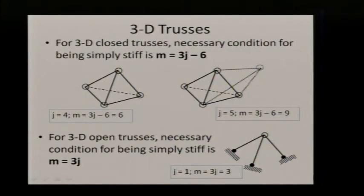So for 3D open trusses, if you have an open truss, you have your tetrahedron, but you do not have the bottom connections. It is connected directly to the foundation. So you have only one free joint instead of four total joints. You have one free joint and three members. So once again for every additional joint, you need three more members. So you have j equals 1, m equals 3, j equals 2, m equals 6.